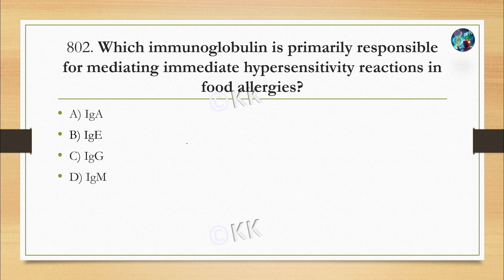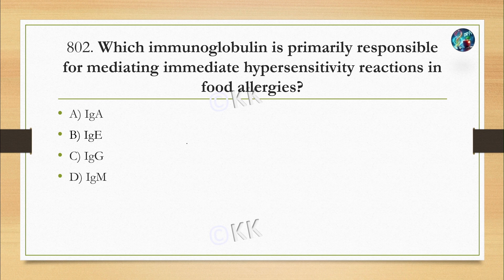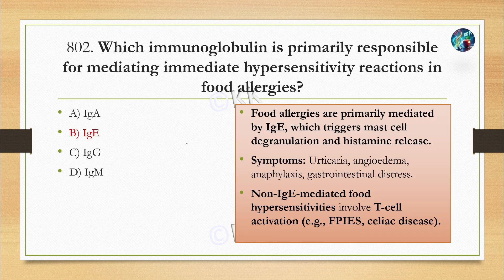Which immunoglobulin is primarily responsible for mediating immediate hypersensitivity reaction in food allergy? Option A: IgA. Option B: IgE. Option C: IgG. Option D: IgM. Our channel also has a dedicated session related to immunoglobulins where full details are mentioned. The correct option is IgE.